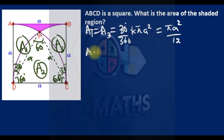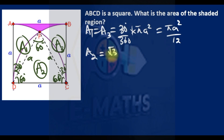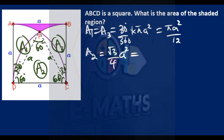The area of the equilateral triangle uses the special formula: √3/4 × side². Since the side is a, the area is √3/4 × a².